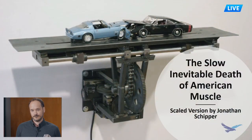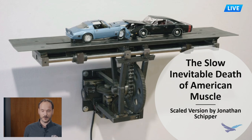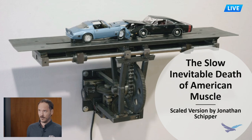Let's take a look at the first project: The Slow Inevitable Death of the Muscle Car. A buddy of Carl's, Jonathan Shipper, is an artist in New York. Carl quit his day job to work on this project called The Slow Inevitable Death of American Muscle. Jonathan's initial piece was a miniature version of a front-end impact between two cars — like two die-cast model cars moving very, very slowly.